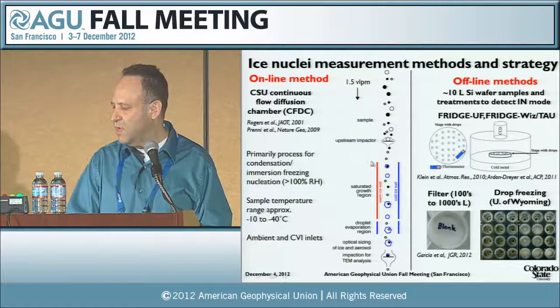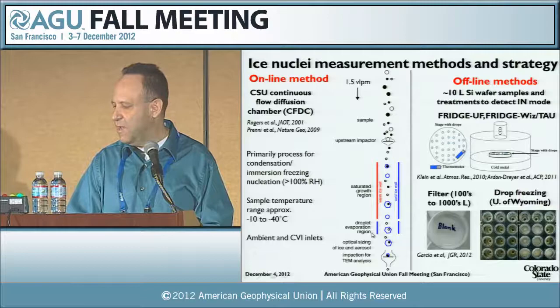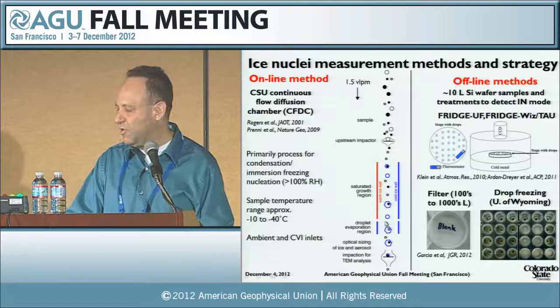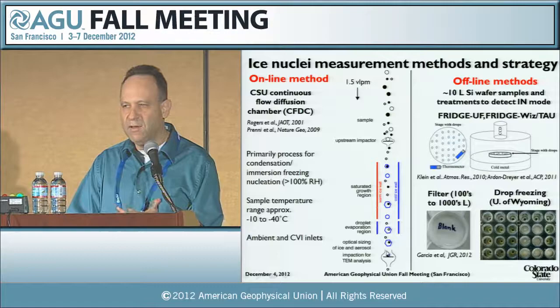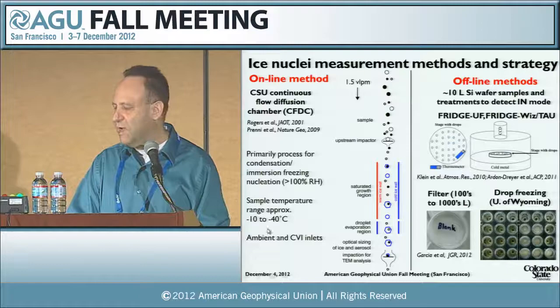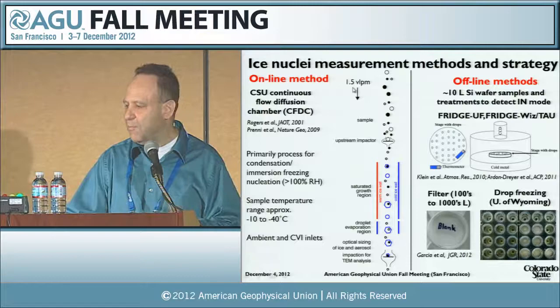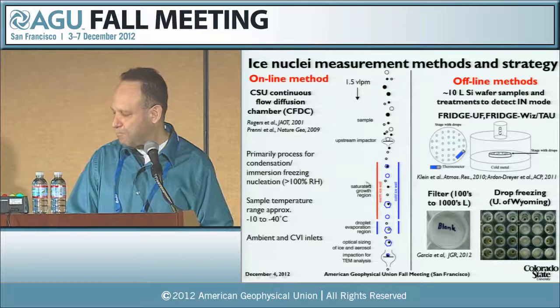We removed the droplets in the lower section by having the temperatures of the diffusion chamber be approximately the same on both walls, leaving ice crystals that we can count and impact to look at the compositions of the residual particles. We sample both from ambient forward-facing inlets on the aircraft and from a counterflow virtual impactor inlet extracting cloud particles. The sample volume is only a liter and a half a minute, so we have to integrate samples over long times to get the relatively low numbers of ice nuclei we sometimes measure.